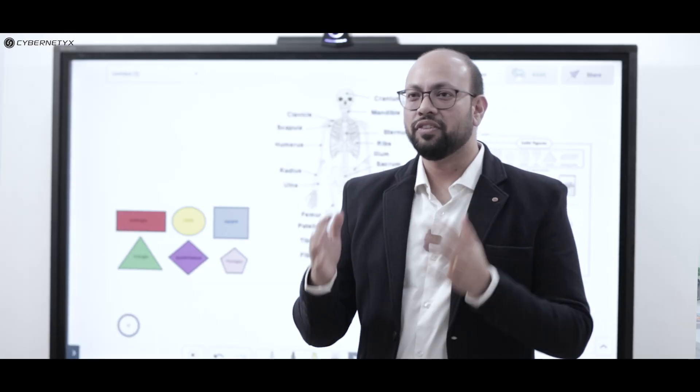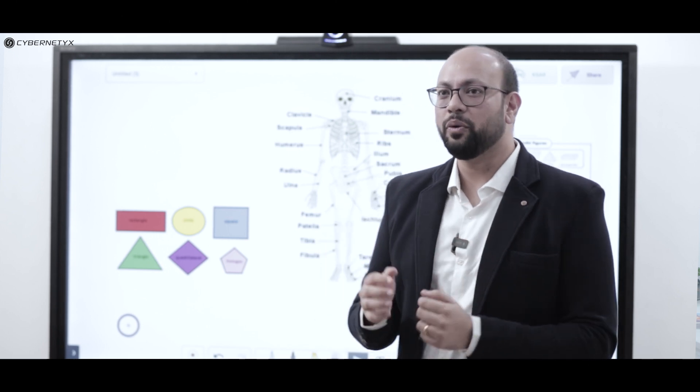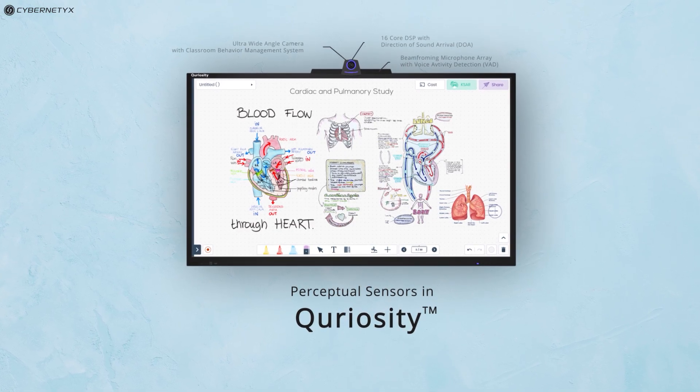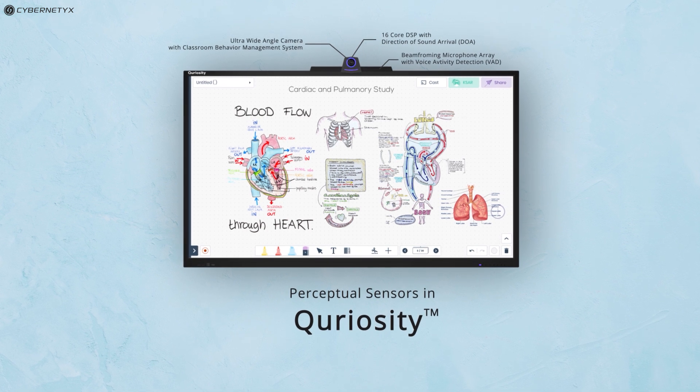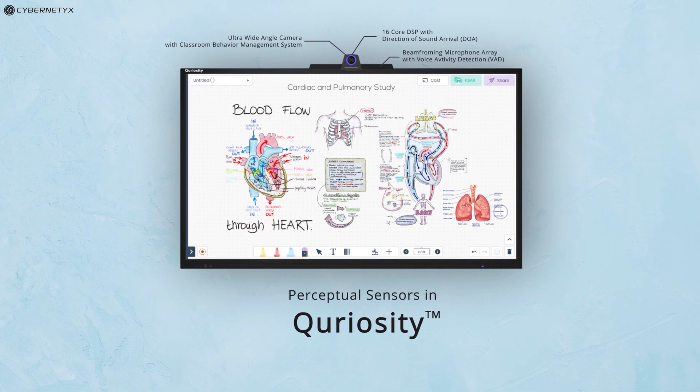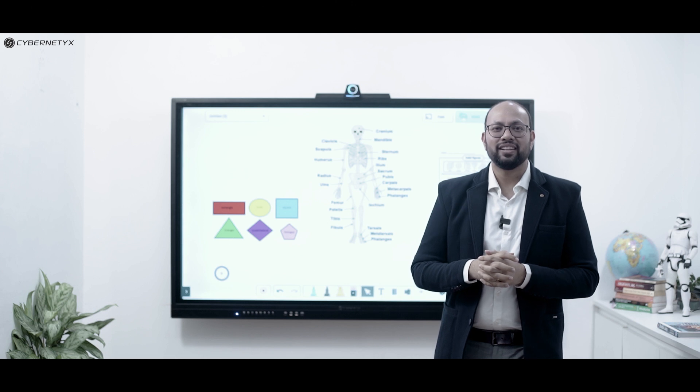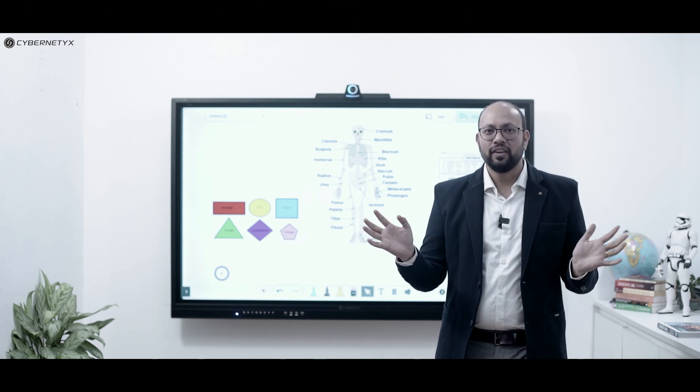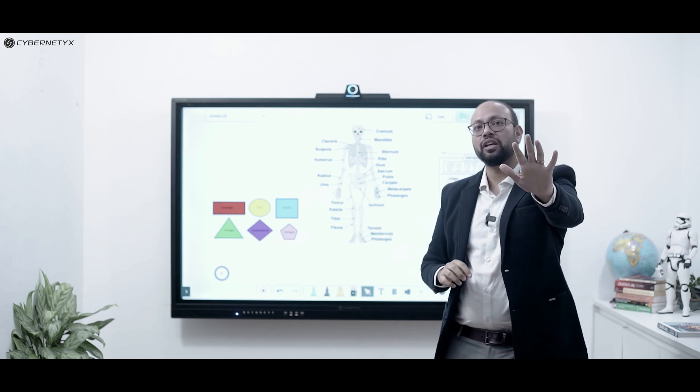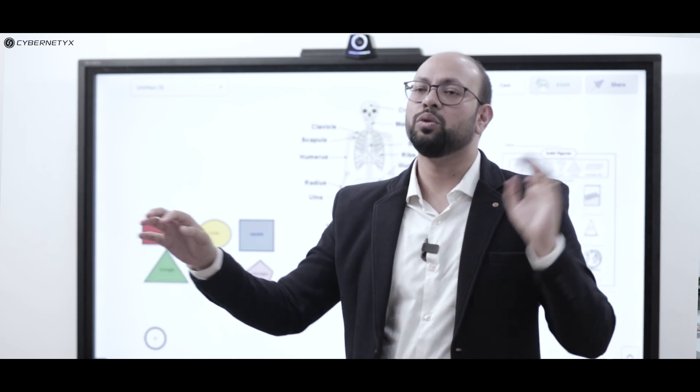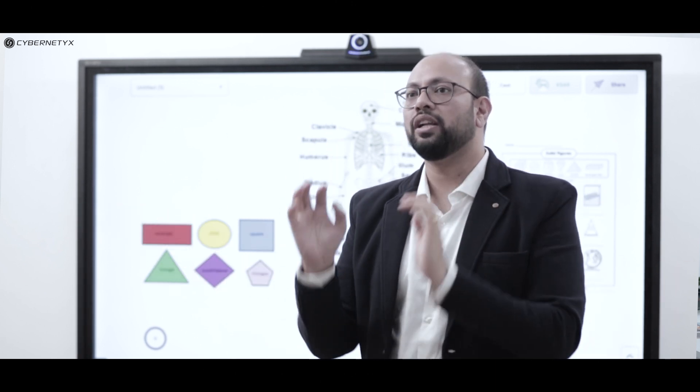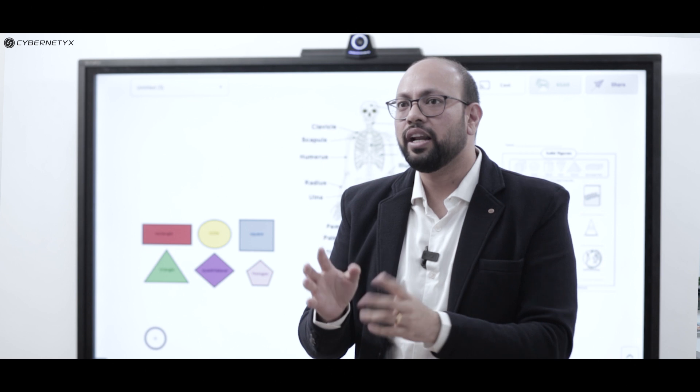Curiosity is the world's first and only interactive display that comes with built-in perceptual AI sensors for classroom behavior management and learning management systems. With 450 nits of brightness and an ultra wide viewing angle, any student sitting at the far end of the classroom or to the extreme right or left can have exact visual clarity with reduced eye strain and improved attention.